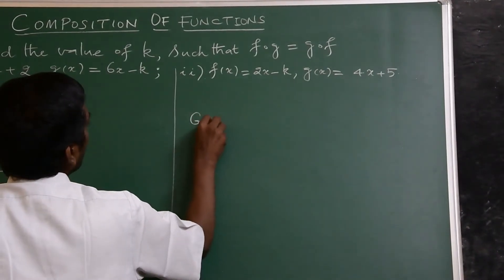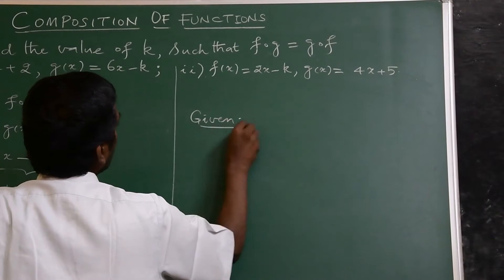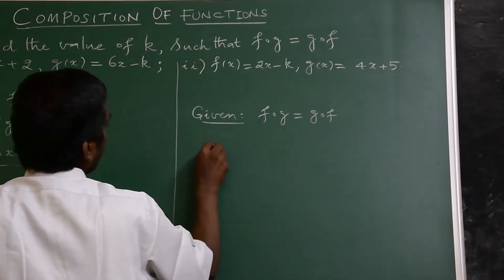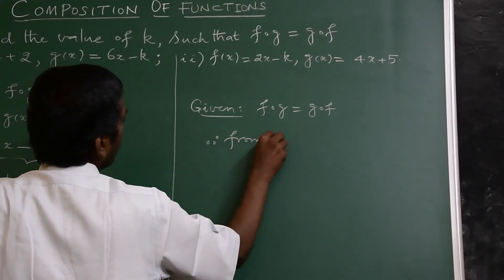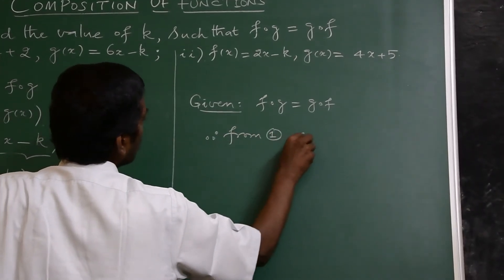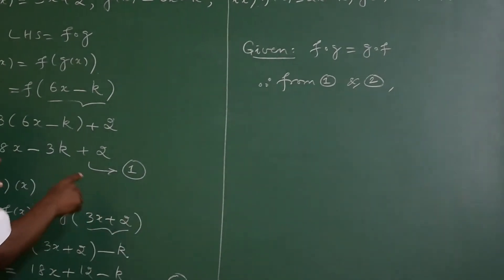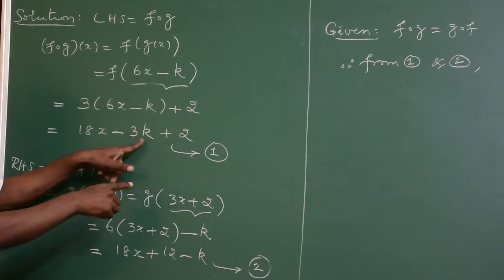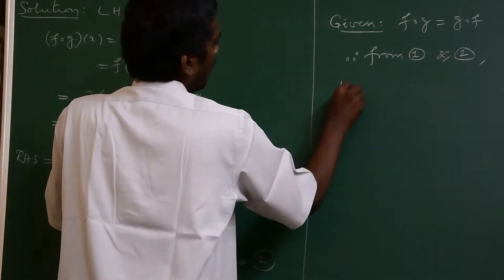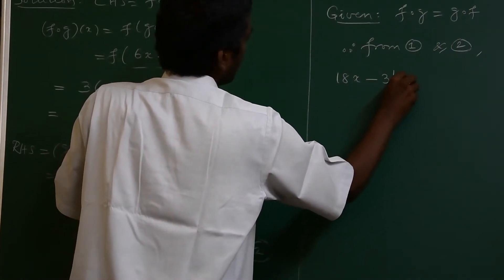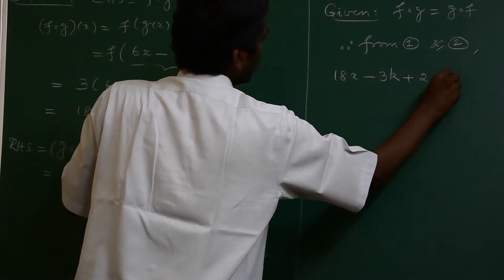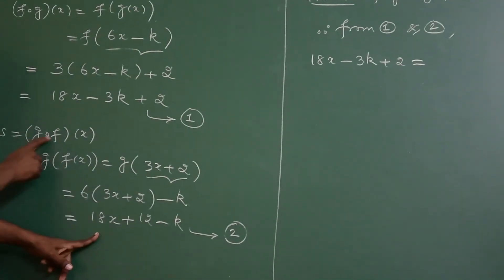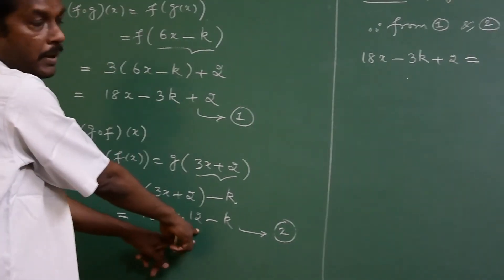Given that f composite g is equal to g composite f, we compare equations 1 and 2. Equation 1 (f composite g) is 18x minus 3k plus 2, and equation 2 (g composite f) is 18x plus 12 minus k.